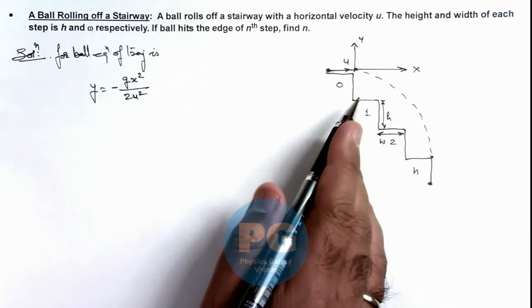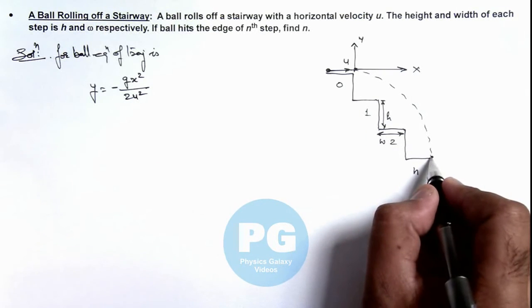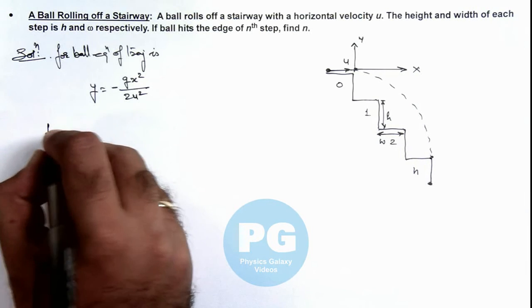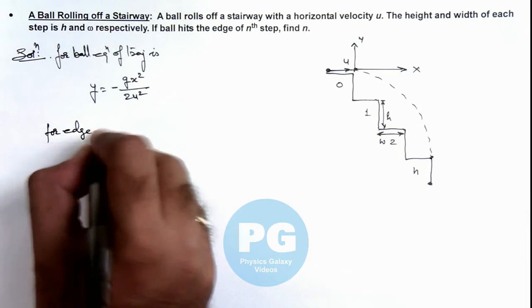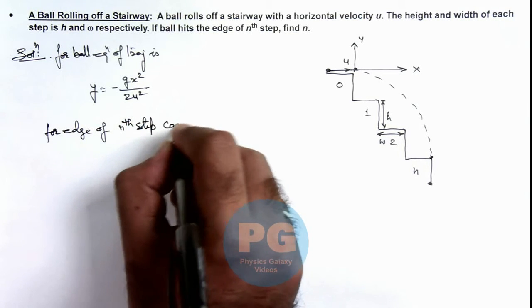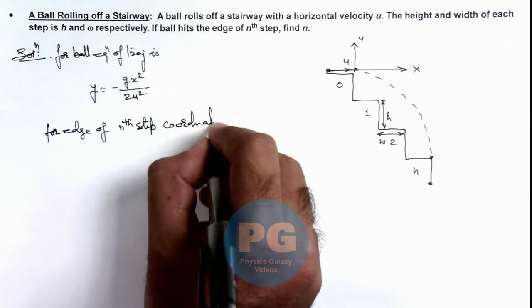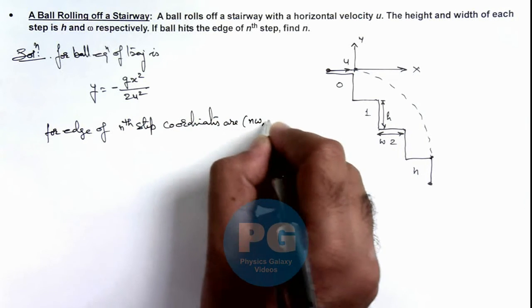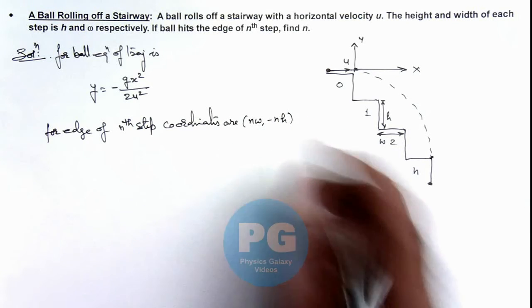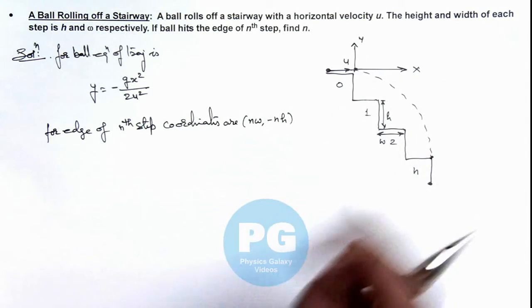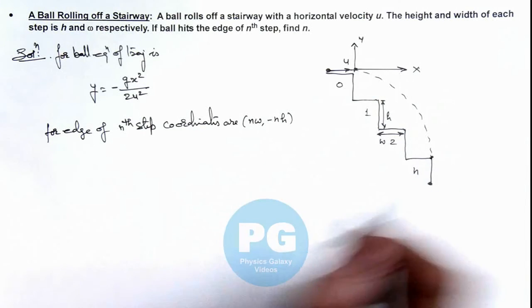Now in this situation, for this nth step, we can write the coordinates for the edge of the nth step. The coordinates are (nw, -nh). As this width will be nw and this depth will be nh, the y coordinate will be -nh.